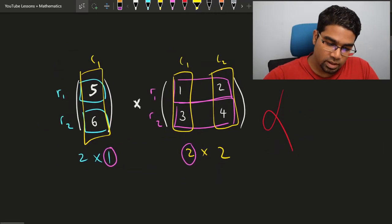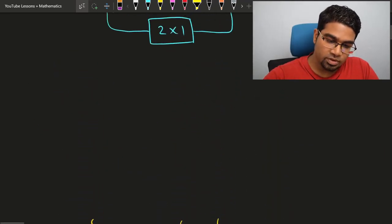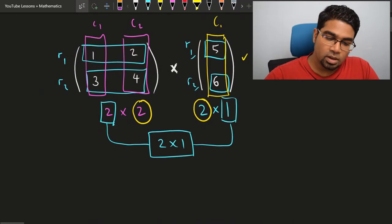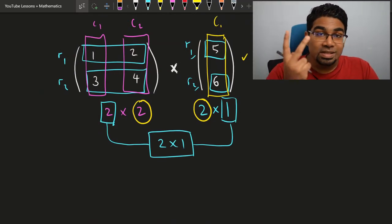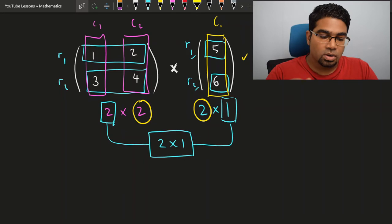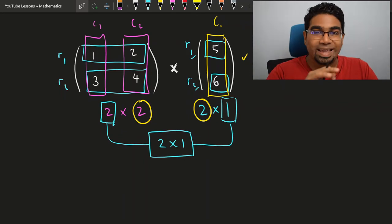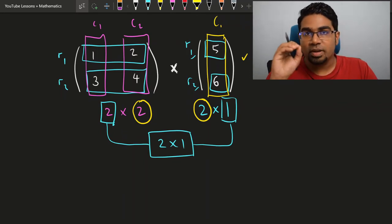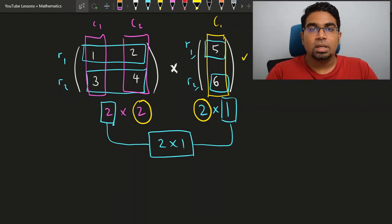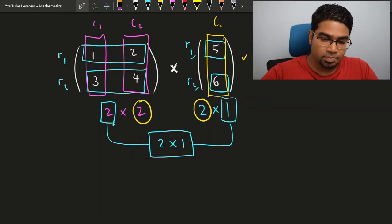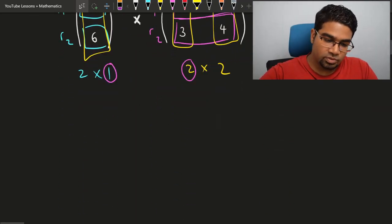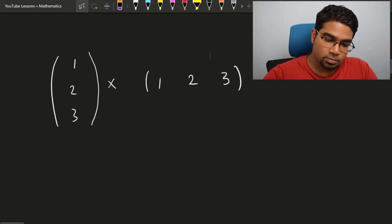Notice that this is the same pair of matrices from before with just the position switched. The position matters here. Just because matrix A can multiply matrix B, it does not mean that matrix B can multiply matrix A.